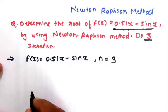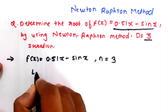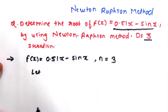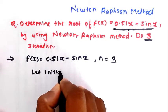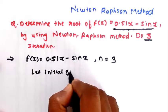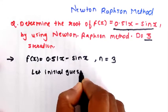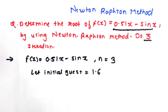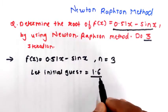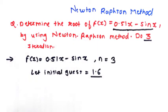First of all, an initial guess is required. We have considered the initial guess as x₁ = 1.6. You can consider any appropriate guess — we just need to satisfy the condition for the initial guess.